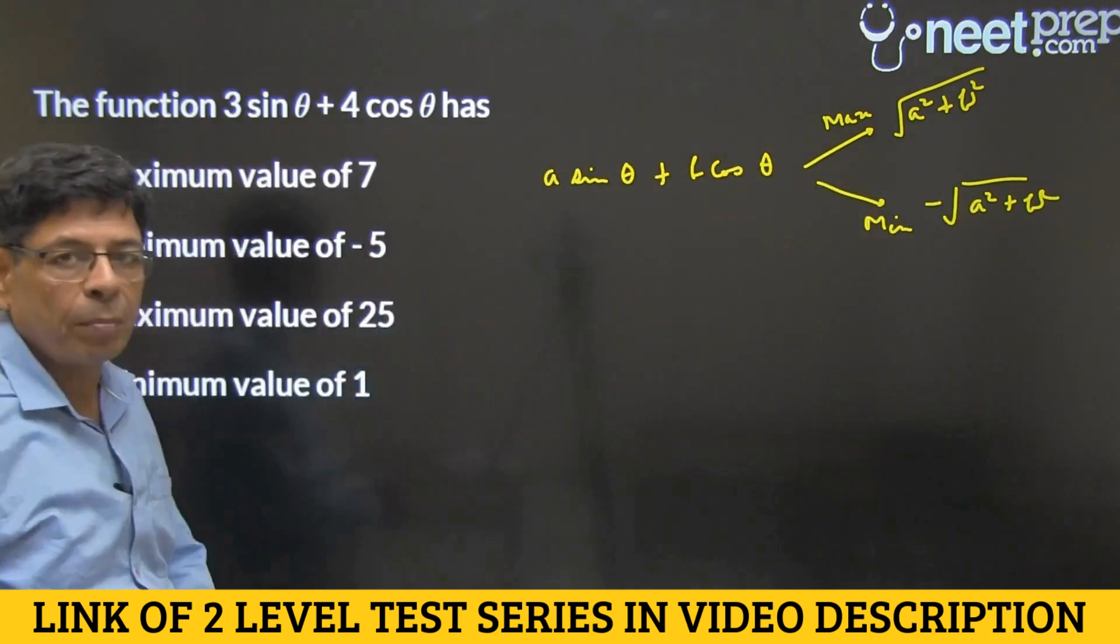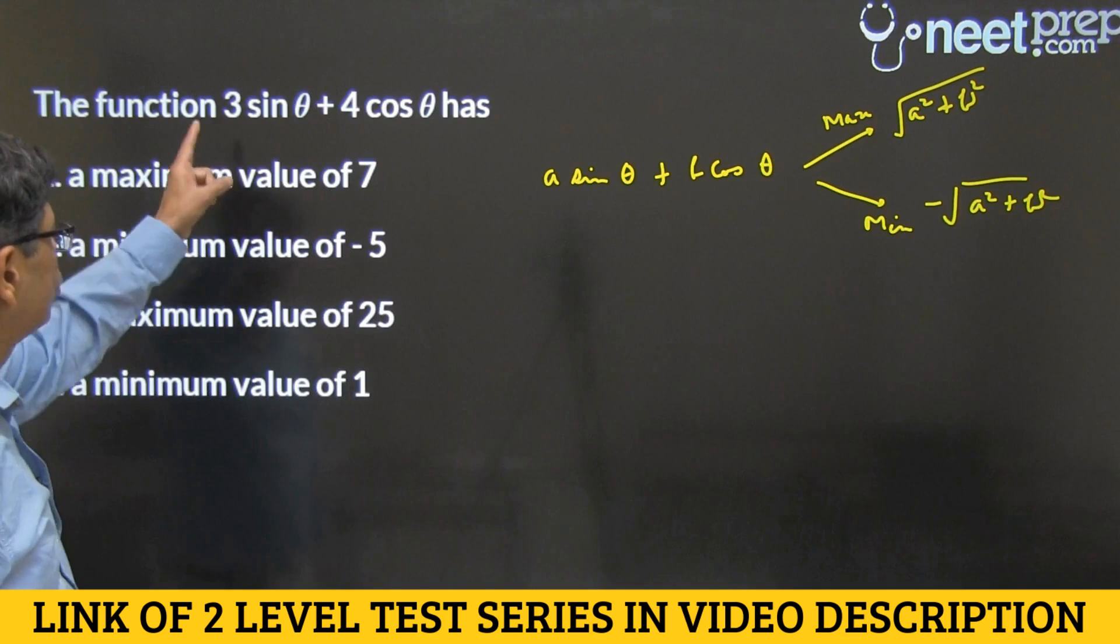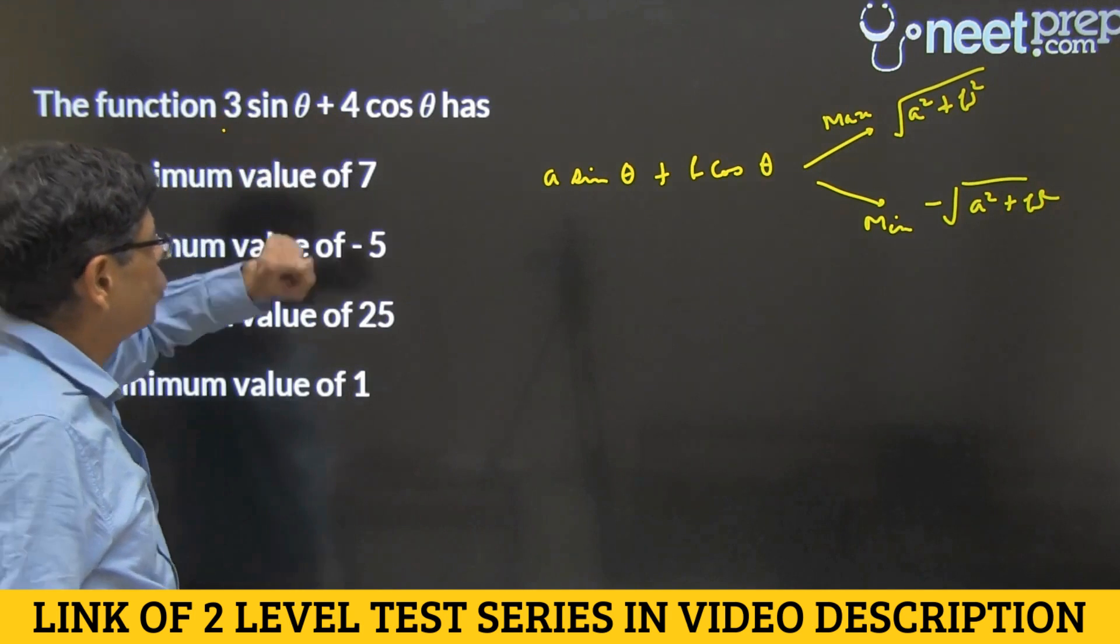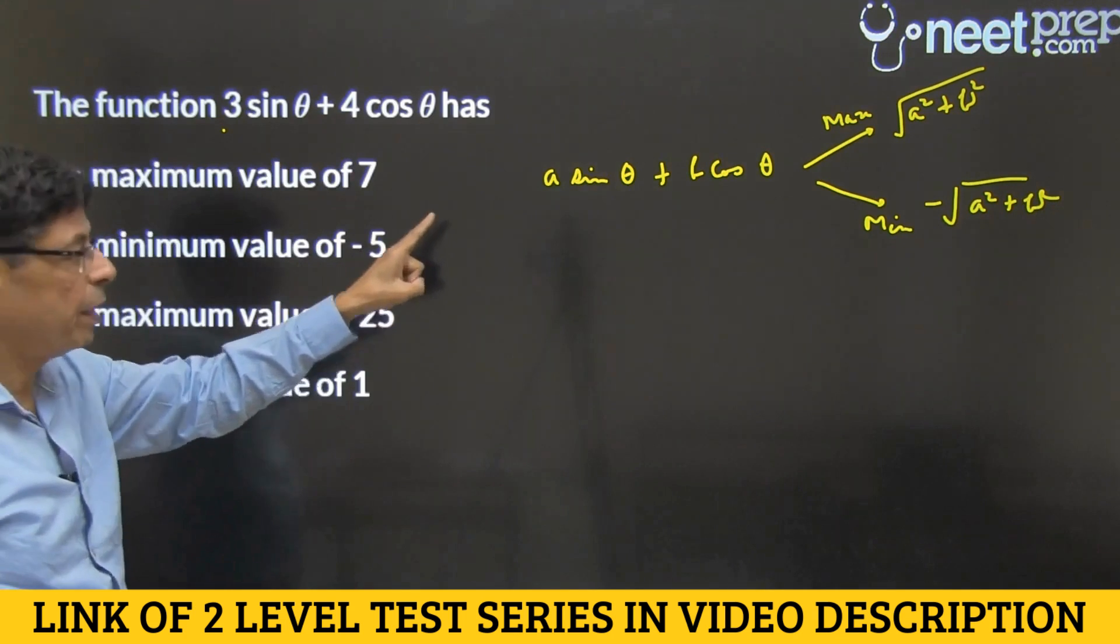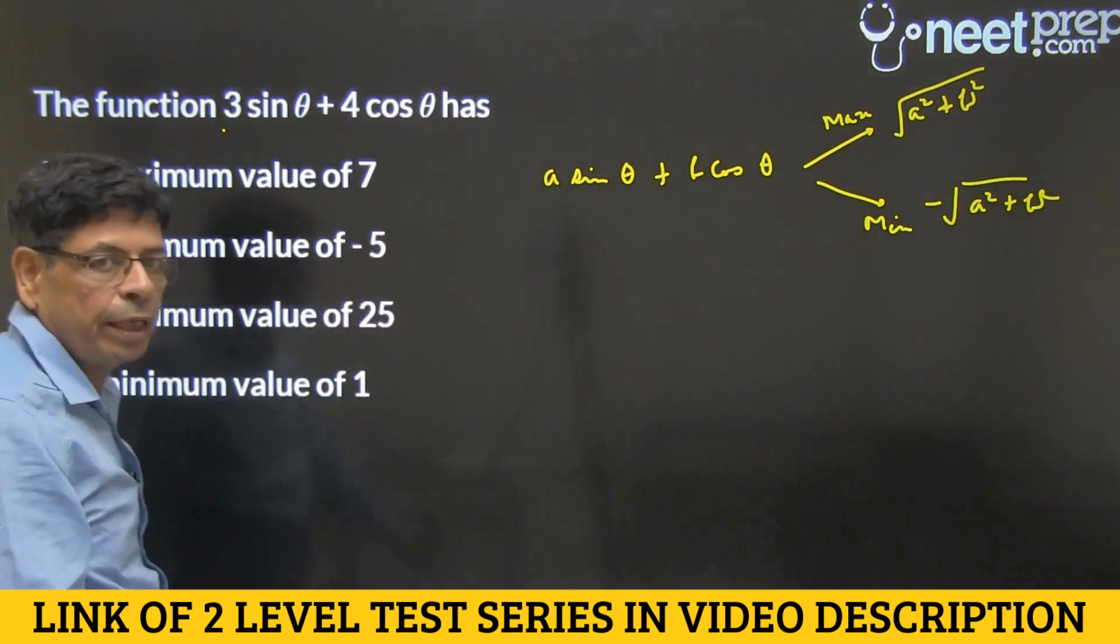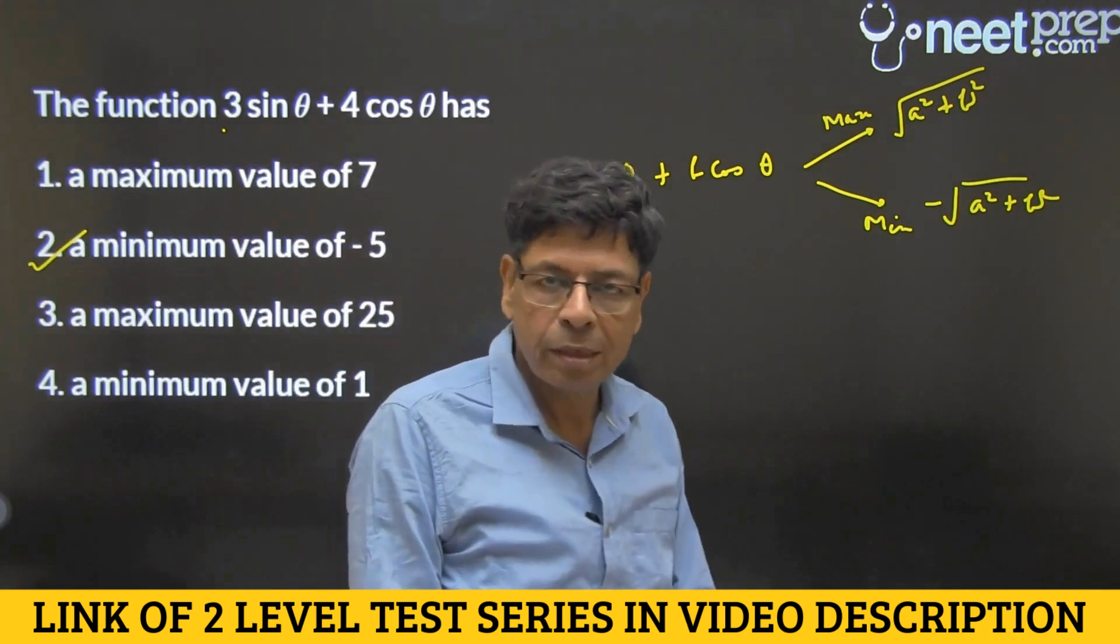Minimum value is -√(A² + B²). So 3² + 4² under root being 5, minimum value is -5. So if you know that result immediately you can tick off option 2 as your answer.